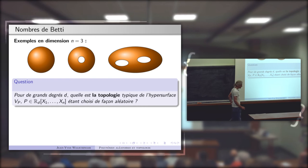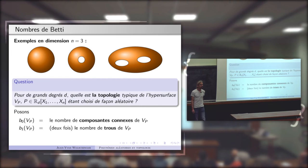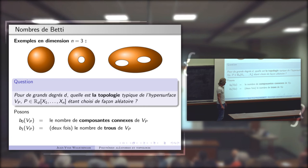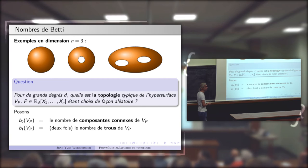Pour mesurer cette topologie, j'introduis ces nombres. Je note B_0(V_P) le nombre de composantes connexes de cet ensemble de racines, et B_1(V_P) le nombre de trous de la surface. Sur l'exemple dessiné avec une sphère, un tore et une surface à deux trous, B_0 = 3 (trois composantes connexes) et B_1 = 6 (le nombre de trous multiplié par 2 vaut 0 + 2·1 + 2·2 = 6).